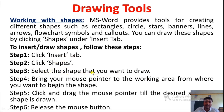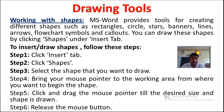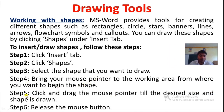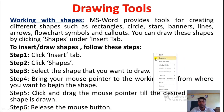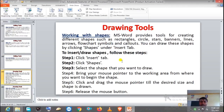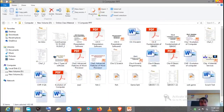After selecting the shape which you want to draw, step four: bring your mouse pointer to the working area from where you want to begin the shape. Step five: click and drag the mouse pointer until the desired size and shape is drawn. Step six: release the mouse button. So we have six steps to follow for inserting a shape in our document.